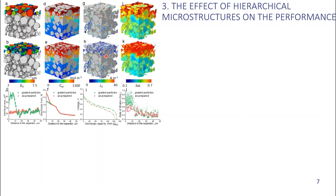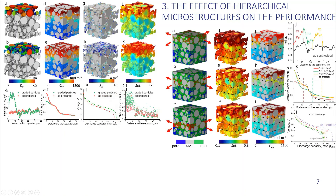We also see a more uniform distribution of the charge transfer current density compared to the original sample, which is linked to a lower polarization in this area. Additionally, this smaller particle or gradient particle design can help to better utilize the active material, as seen in the different state of lithiation compared to the original sample. All of these factors combined lead to an improved rate capability of the graded design. We can also explore the effect of the pore size or porosity distribution.